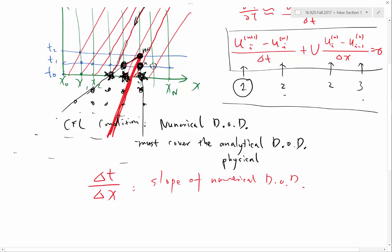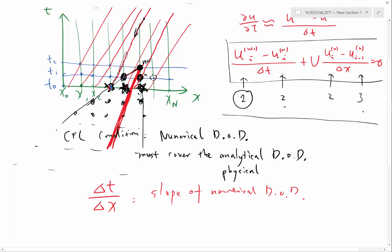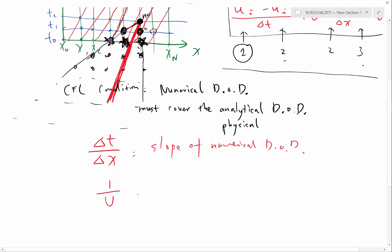U? U? Common mistake. U? Are you sure the slope is U? So if U is 0, the lines are going to be horizontal or vertical? Vertical, right? So if U is 0, the slope is going to be infinite. 1 over U. 1 over U, that's right. So 1/U is the slope of the physical domain of dependence.